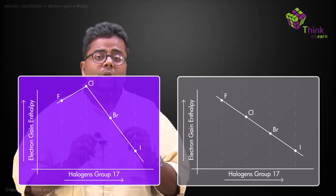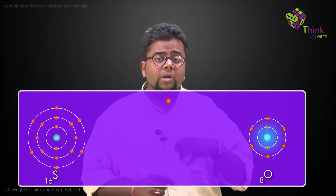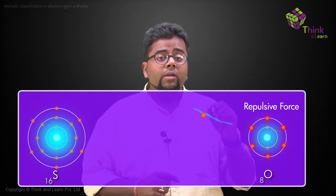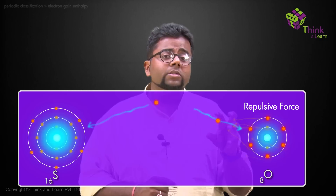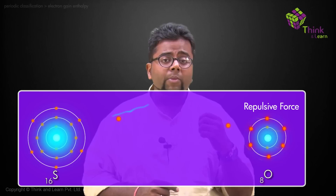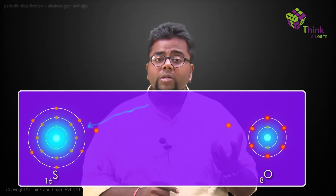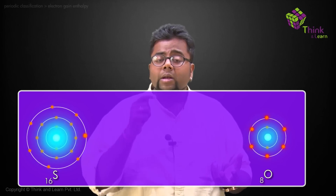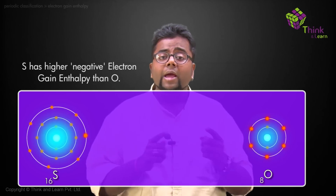A similar exception exists between oxygen and sulfur. Oxygen, being very small, has 6 electrons in its outermost shell where the second shell can accommodate a maximum of 8 electrons. So when one electron tries to come in, there are 6 electron-electron repulsions. For sulfur, that is not the case. Therefore, the higher negative electron gain enthalpy value is for sulfur and not oxygen.